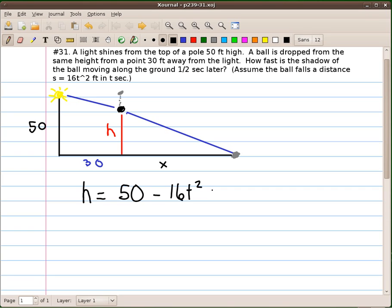Now, what we want to find is the rate at which the shadow is moving. How fast is the shadow moving a half a second later? So we're trying to find dx/dt, how fast the shadow is moving.